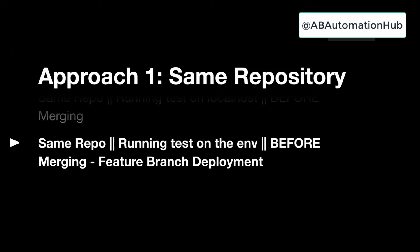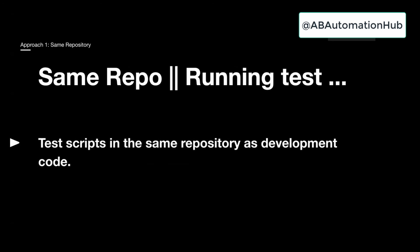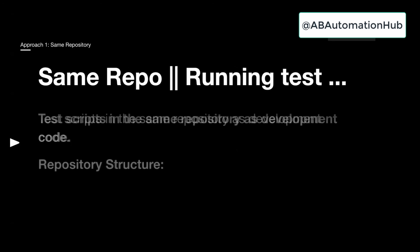In this approach, we have feature branch deployment. In many organizations today, this is a common practice: before merging your code into master, the feature branch is deployed to that environment. Once all the testing is done, the code is merged. This is very common in big MNCs and product companies that want to verify before merging anything into master.